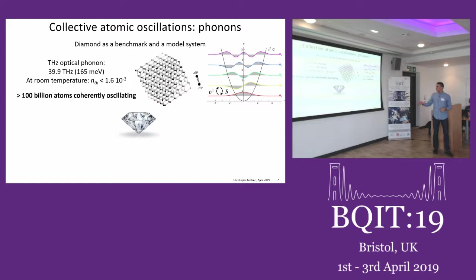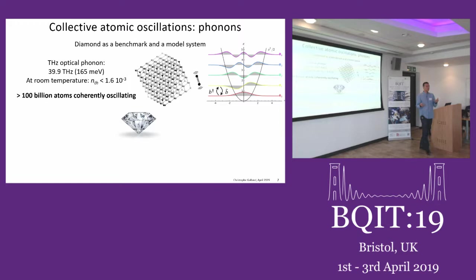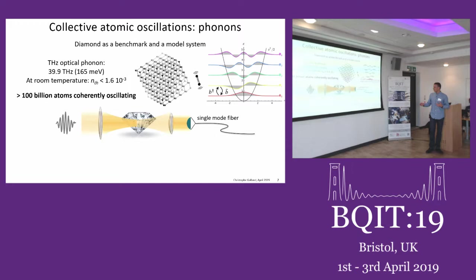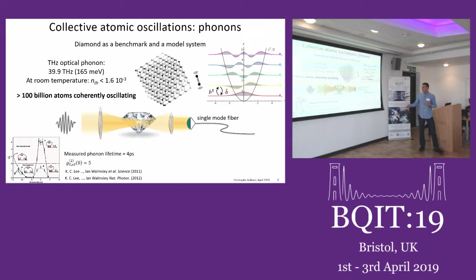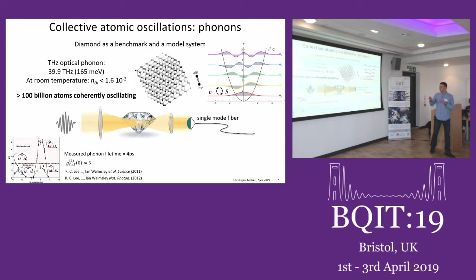We use diamond as a test system. It has very nice optical properties and a phonon mode at about 40 terahertz that is Raman active, so it's an easy system to test our techniques. It's also interesting because it's a macroscopic phonon we are looking at — it contains really hundreds of billions of atoms in coherent motion. I should also acknowledge the pioneering work of the group of Ian Walmsley, who was at Oxford at the time, who did first measurements on these phonons in diamond using different techniques. We have improved by more than an order of magnitude on those results, allowing us to do new measurements.